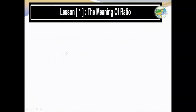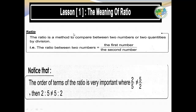Now we will take Lesson 1: the meaning of ratio. This is the first lesson in Unit 1. The ratio is a method to compare between two numbers or two quantities by division. The ratio between two numbers equals the first number over the second number.